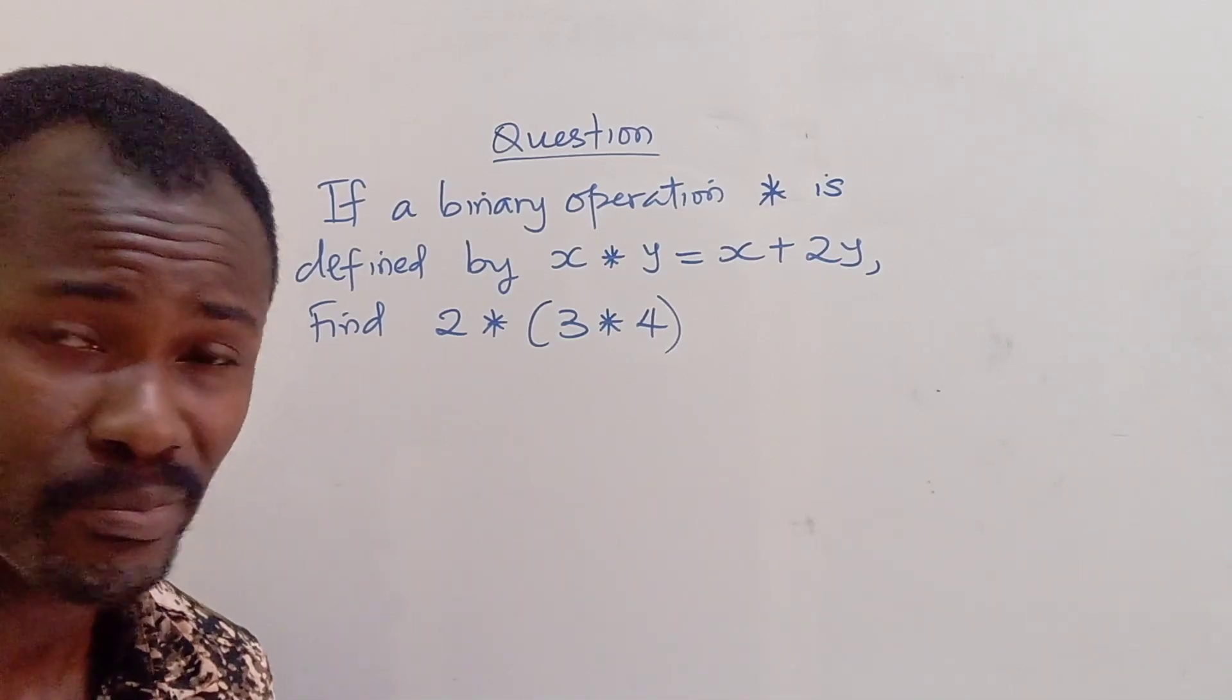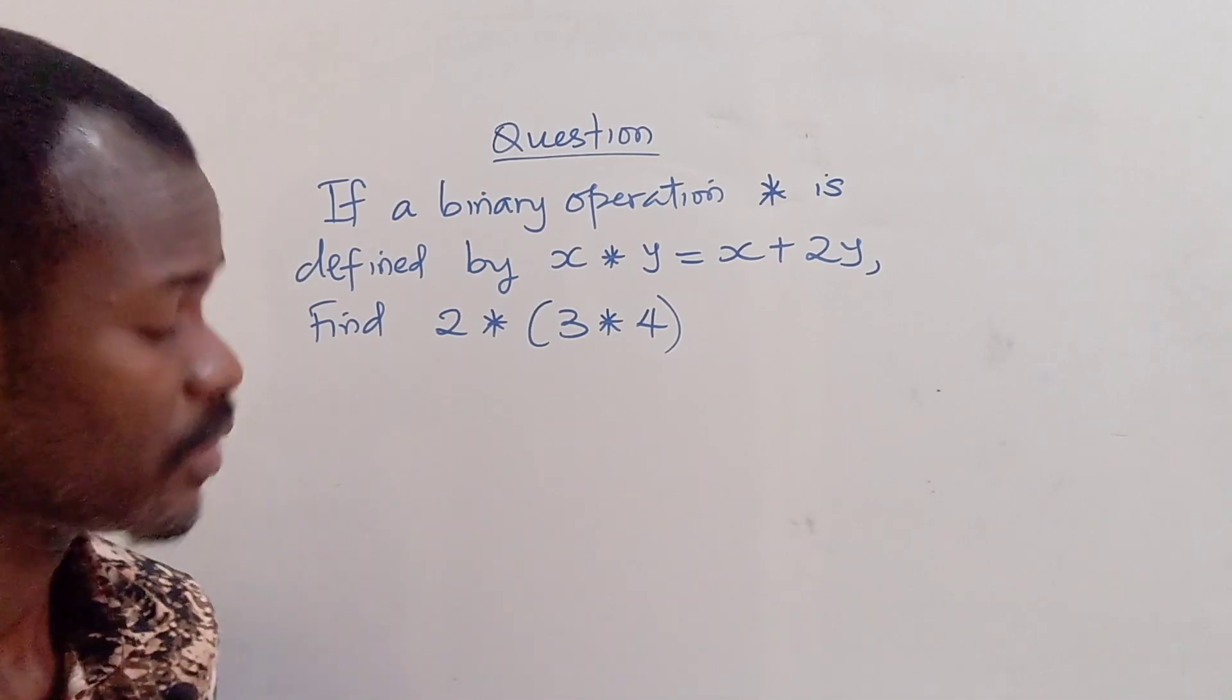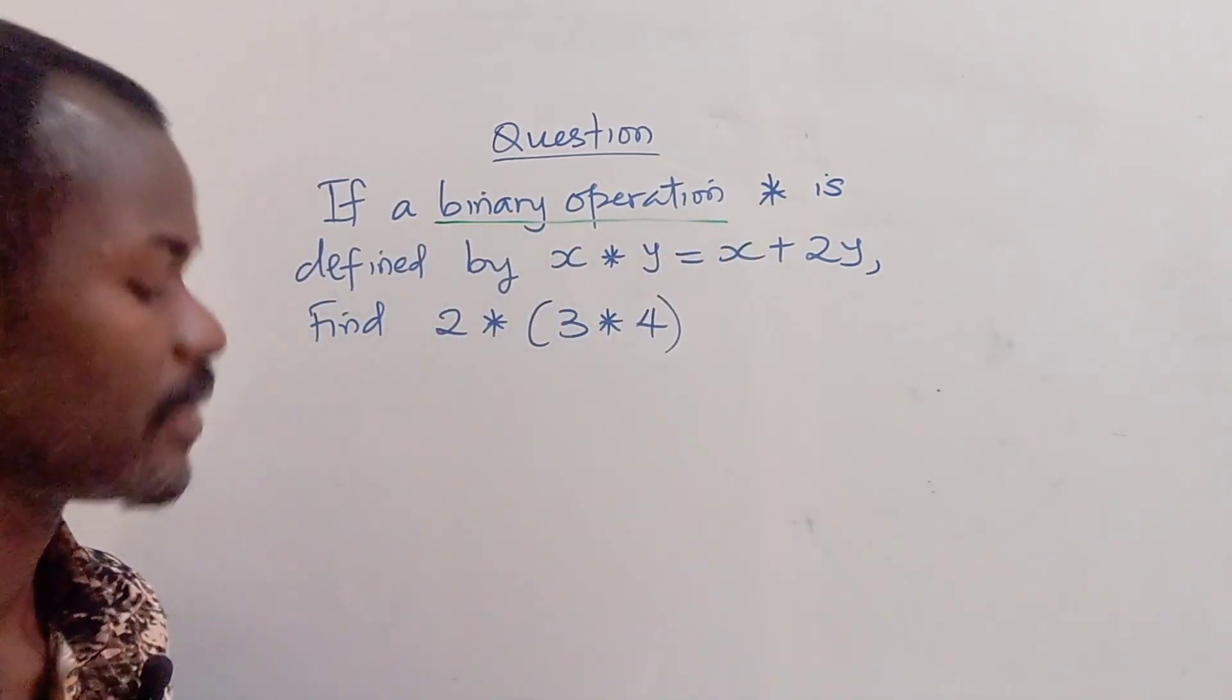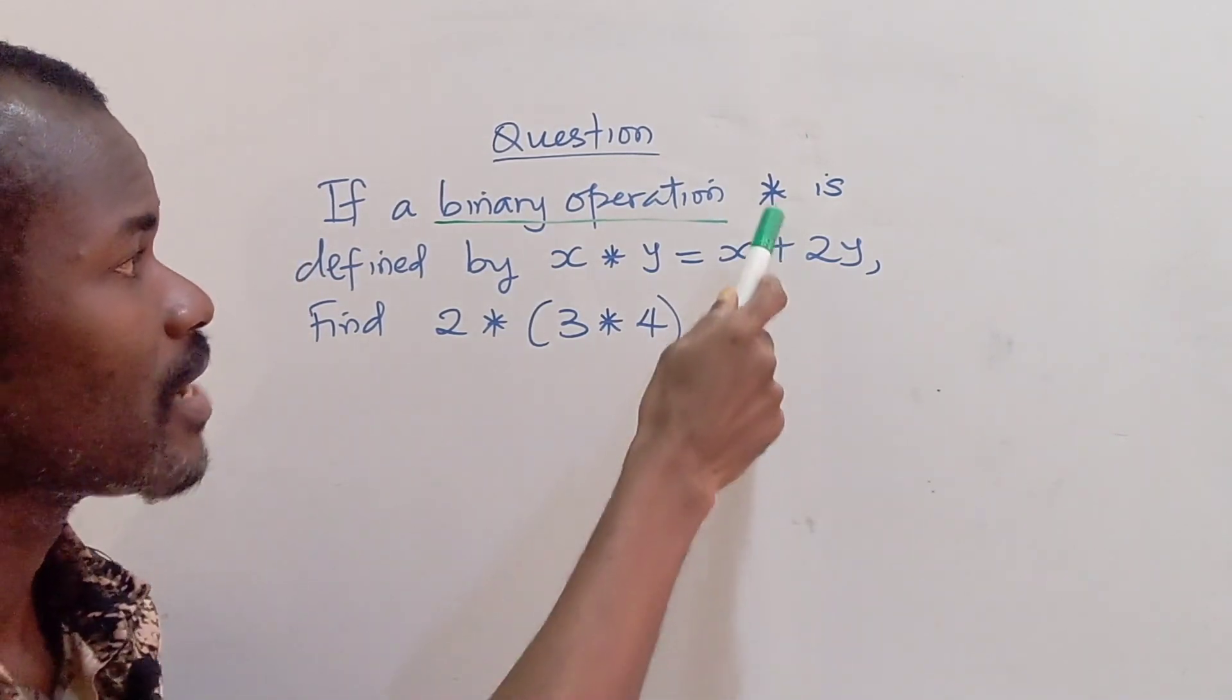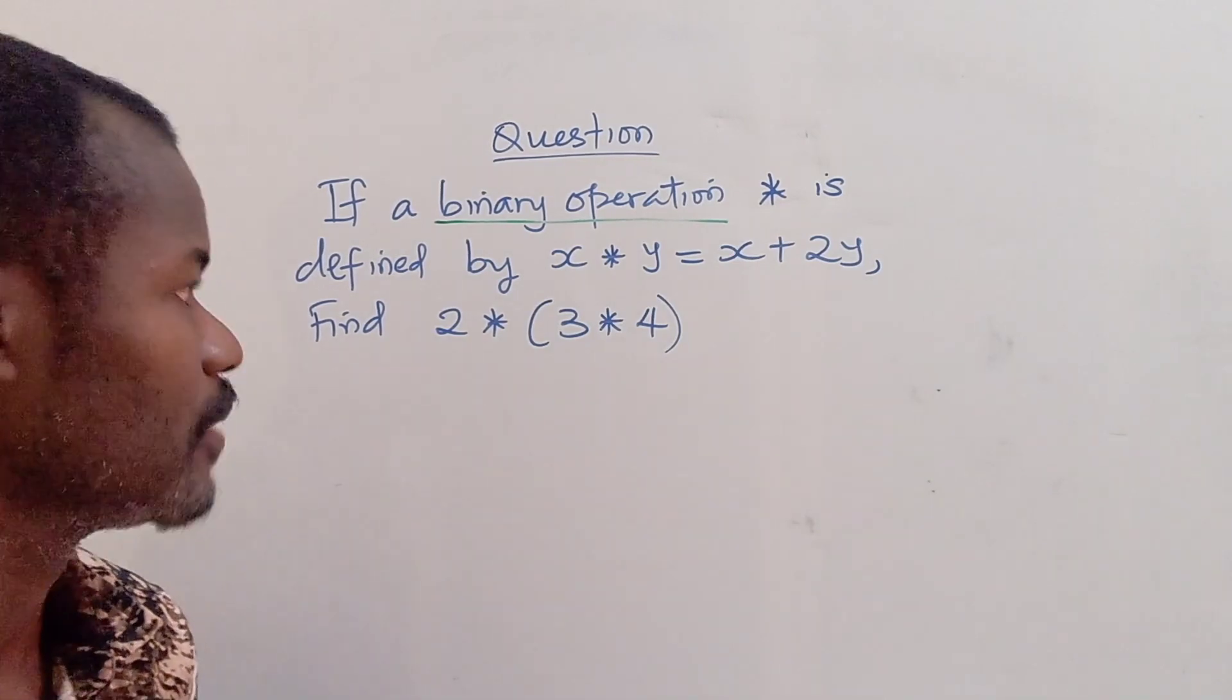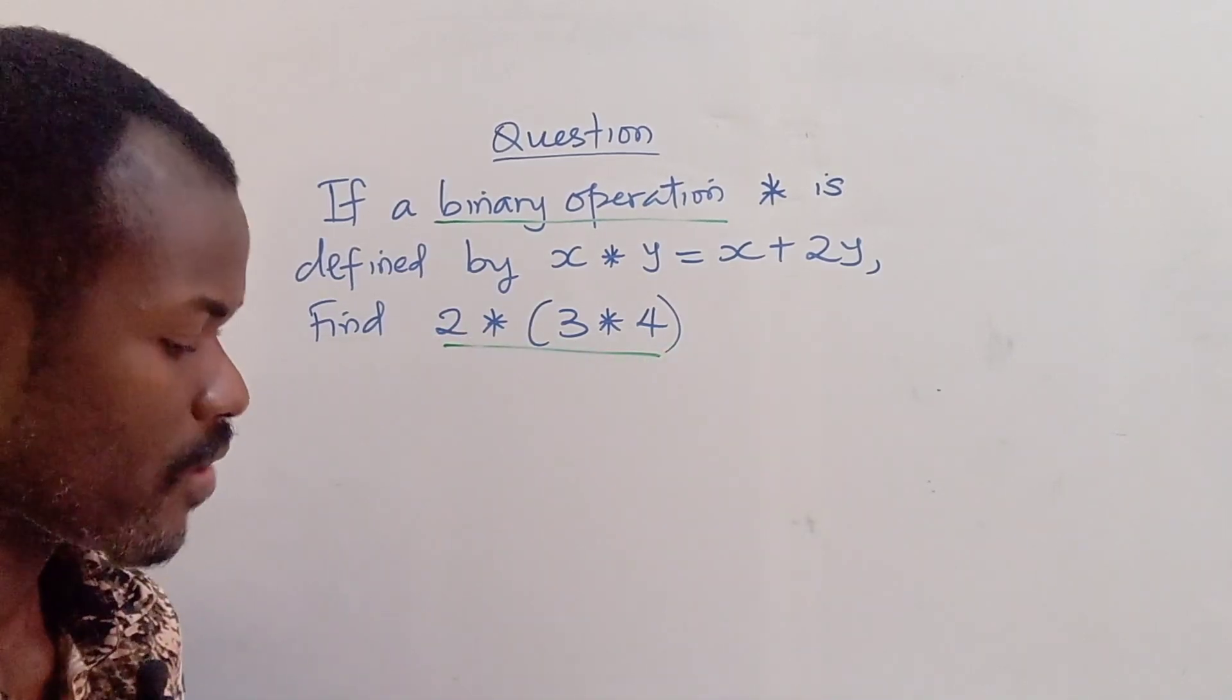So let's look at this problem. It's a topic we must have come across before in subjects like further mathematics. We have a binary operation, so if a binary operation asterisk is defined by x asterisk y equals x plus 2y, find 2 asterisk (3 asterisk 4).